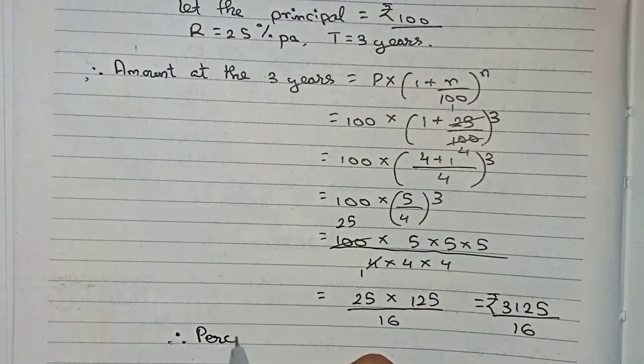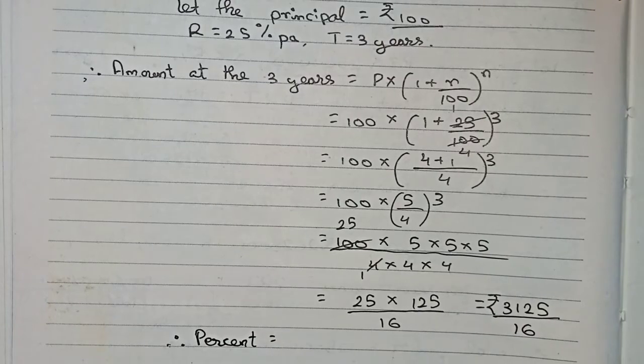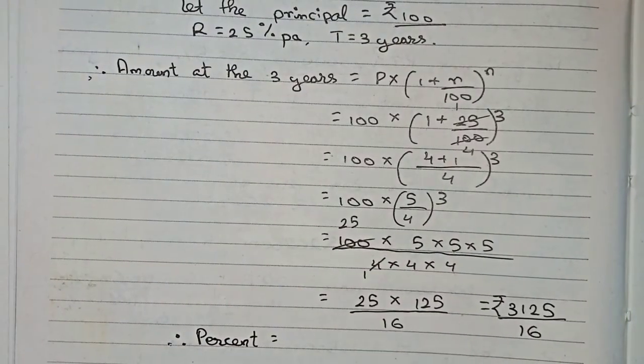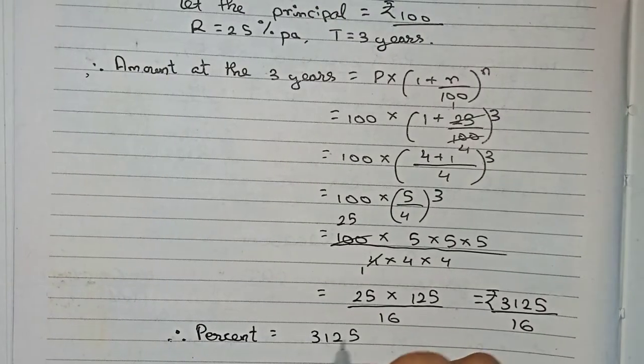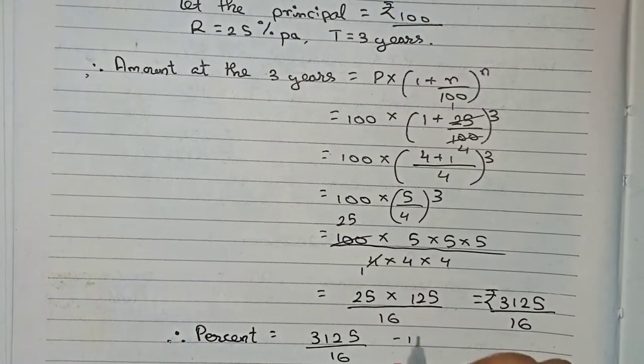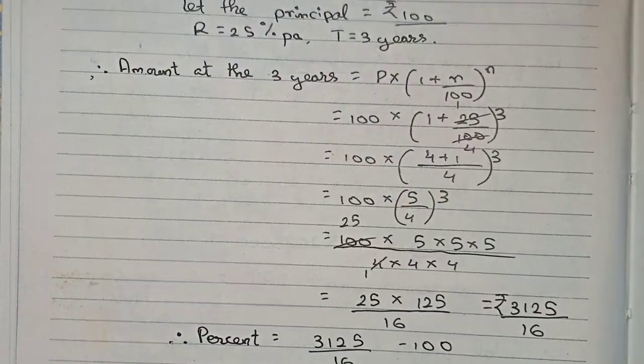We only have to subtract 100 from this number: 3125/16 - 100, and we will get the percentage.